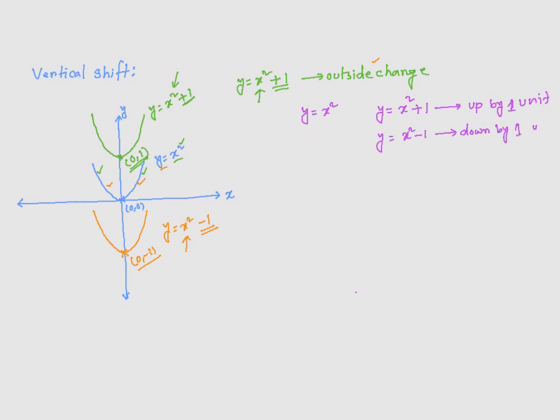In general, if you have a function, y is equal to f of x, and you make the following changes to the function. We are making an assumption that k is a positive constant, meaning k is greater than 0. Then, y is equal to f of x plus k is going to make it move up by k units.